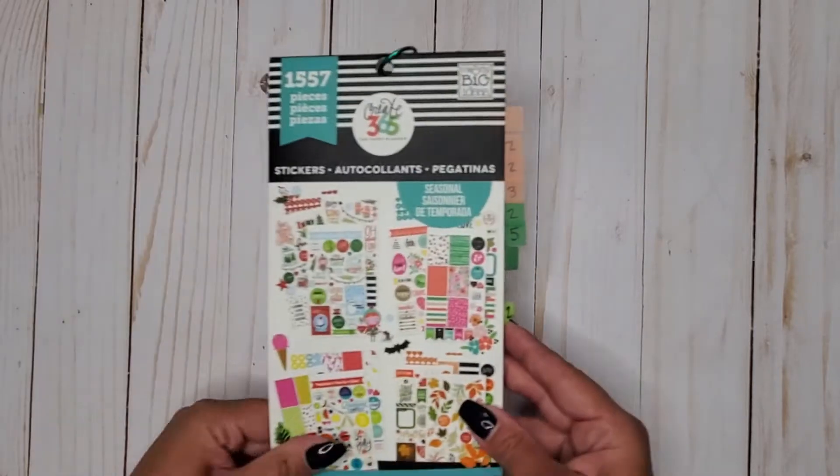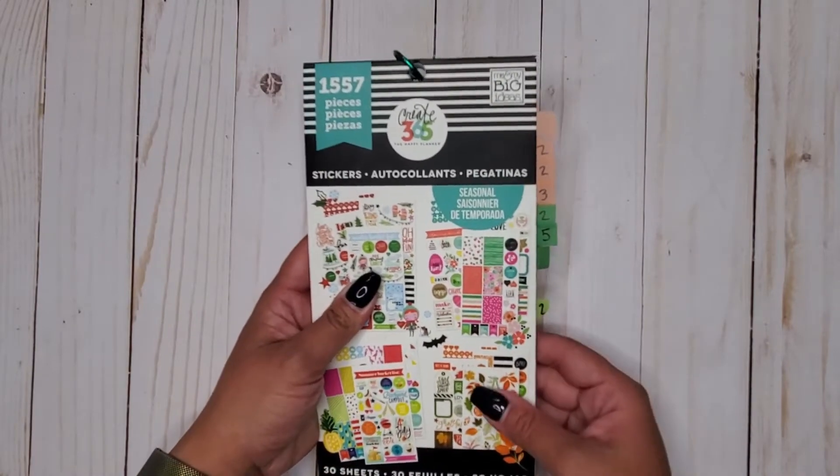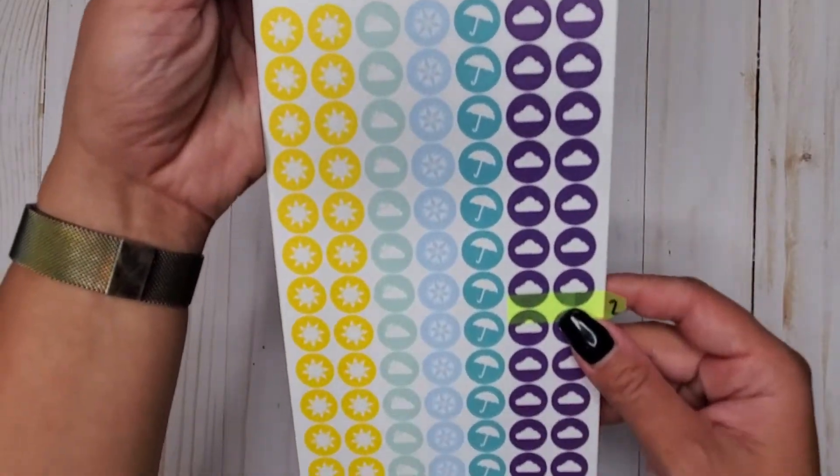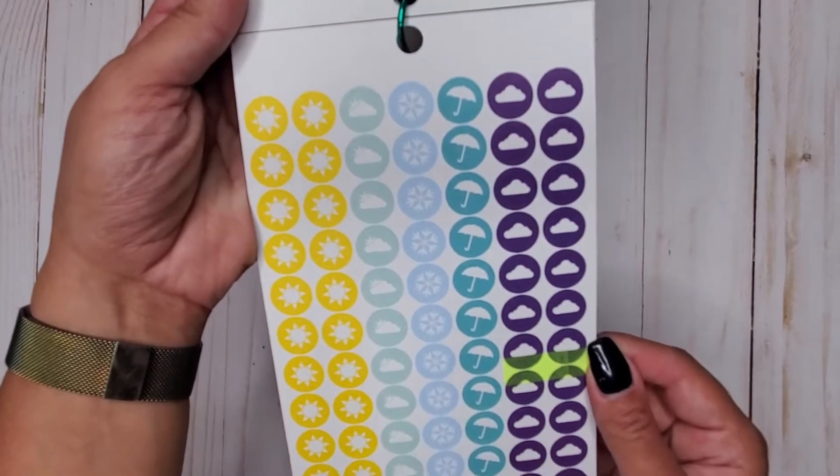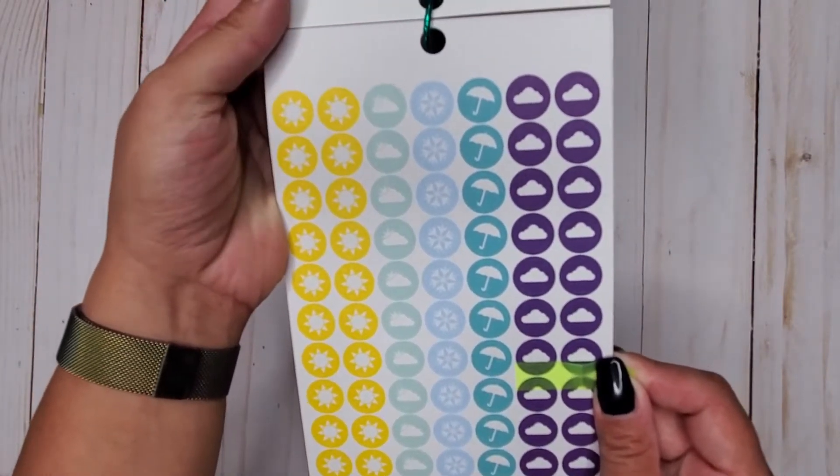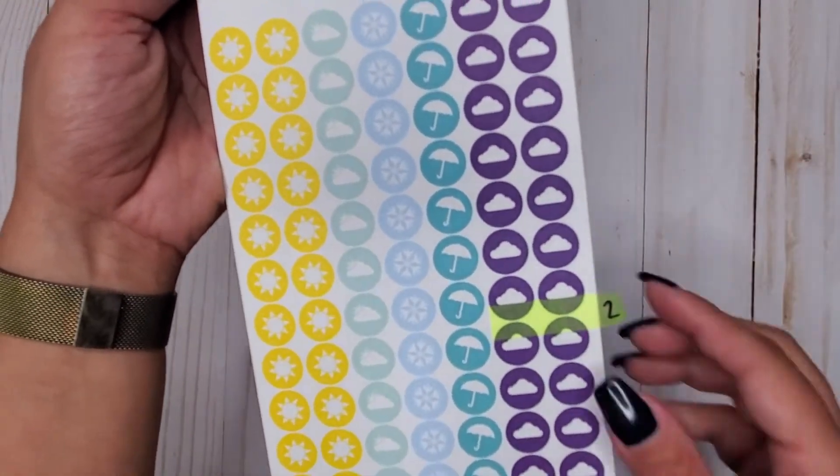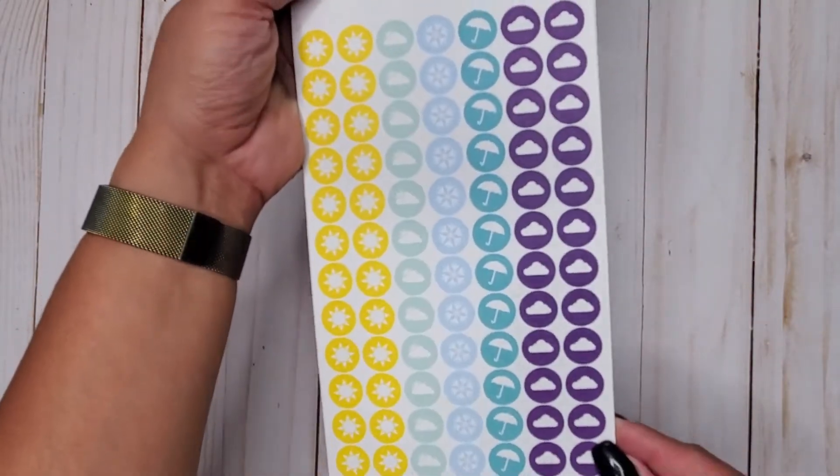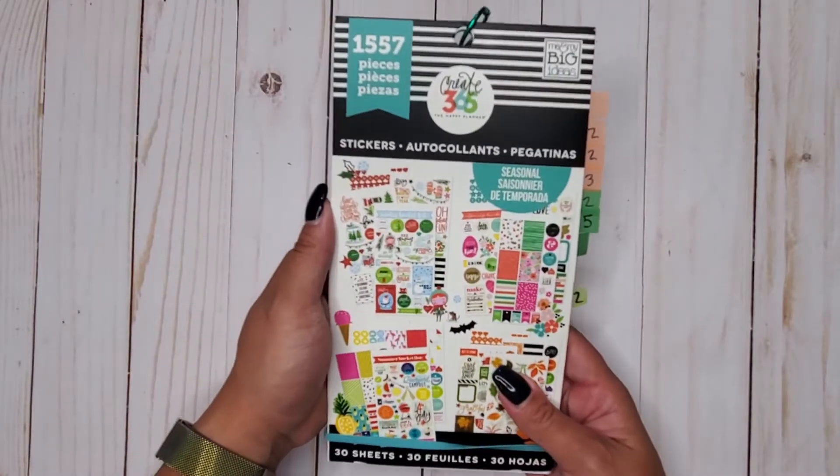The very first book we have is the seasonal sticker book 1557. In here we have our little sheet here that has all of our little weather icons. We have our little sun, we have like our cloudy day but with sun, and then snow, we have rain, and then we have like our cloudy. And we get two sheets of those in this book. Just little cute circle icons, so that is in seasonal 1557.